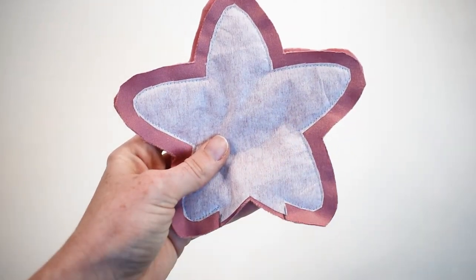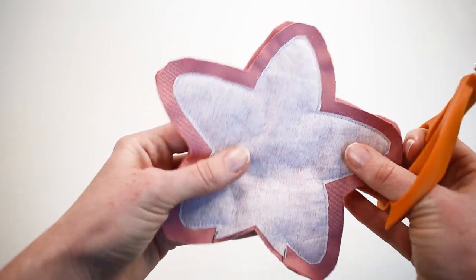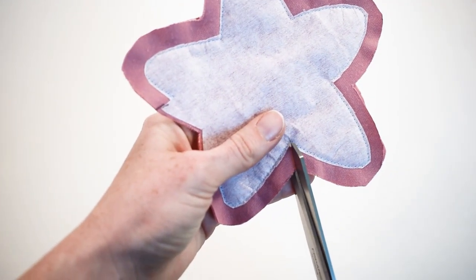Snip the star's corners on each side except for where the opening is. Snip close to the stitching line but don't cut through it.